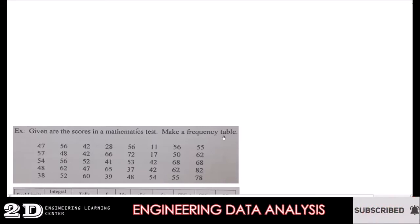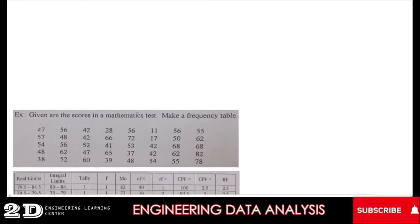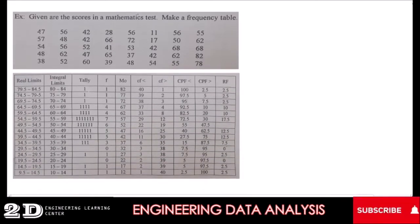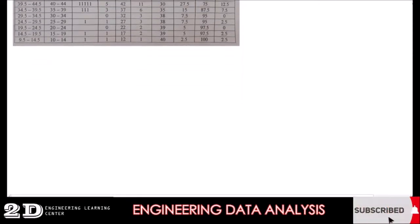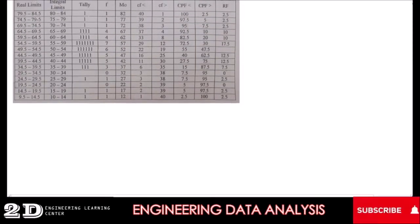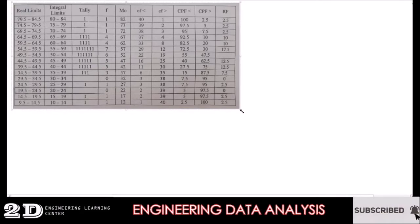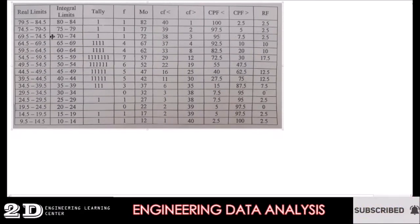So if you are going to make a frequency distribution of this data, it will look like this because we are going to group this data. This is the frequency distribution of grouped data, and they are presented in intervals.